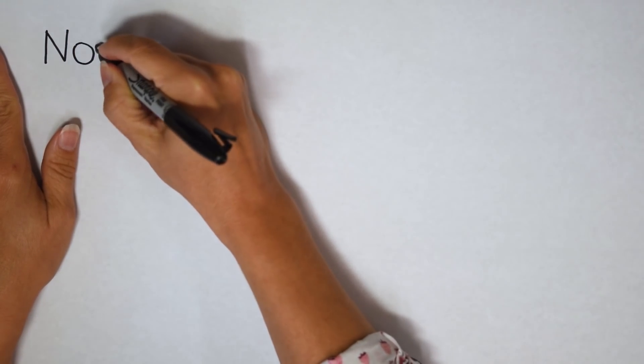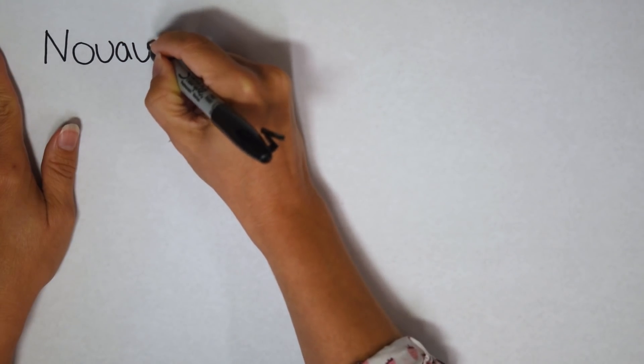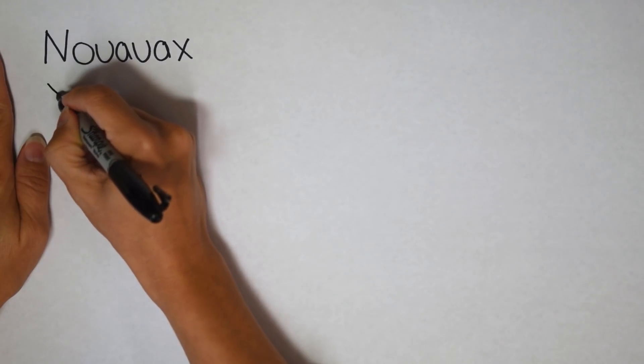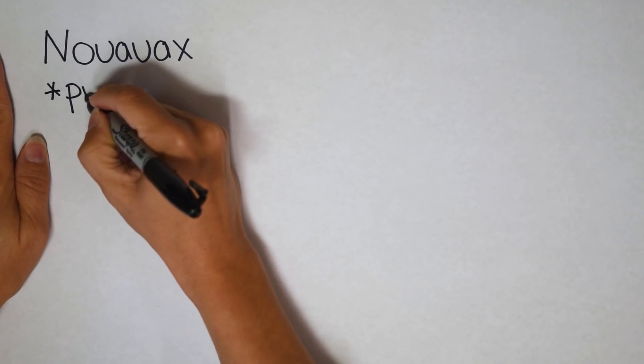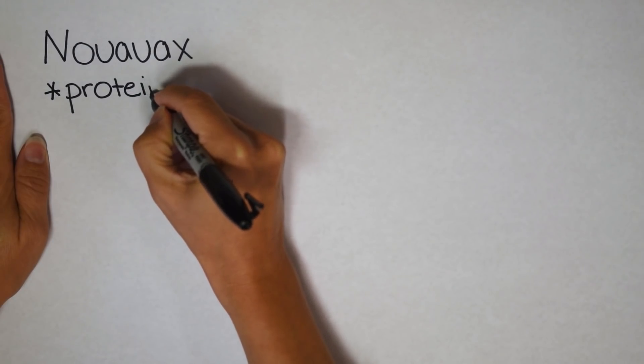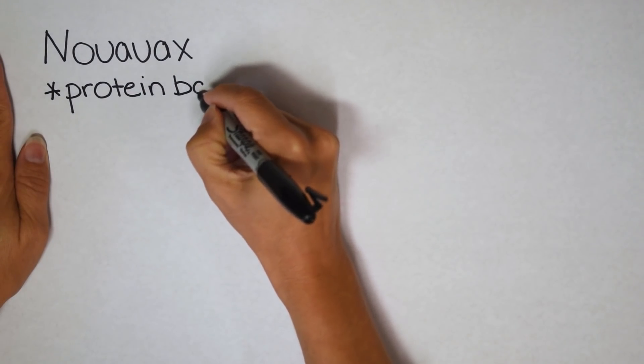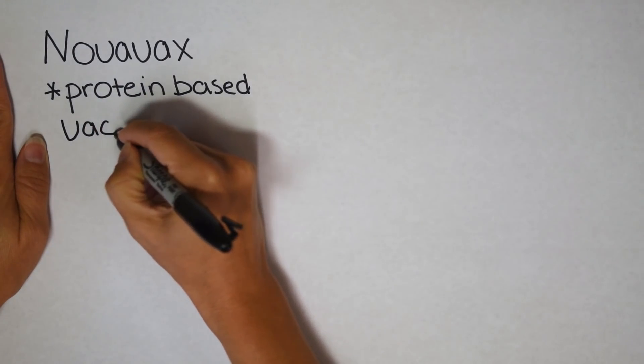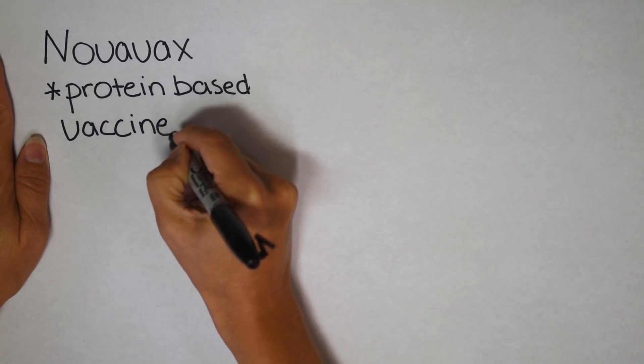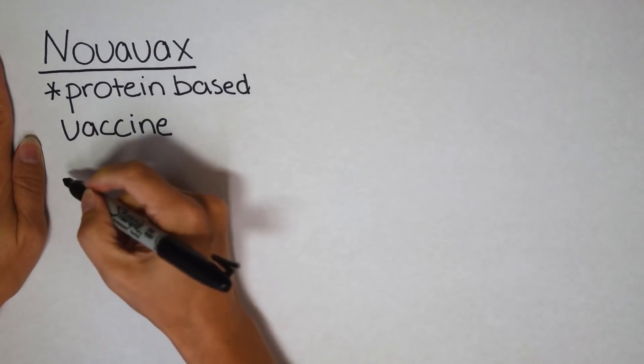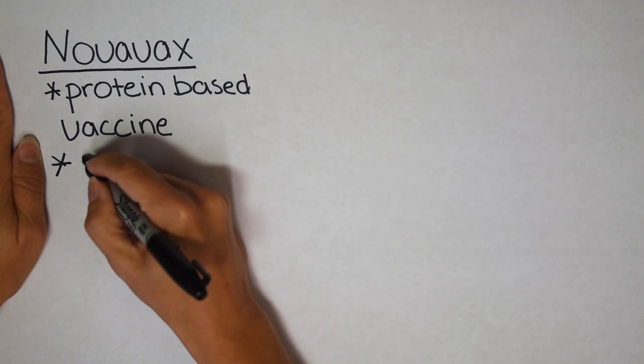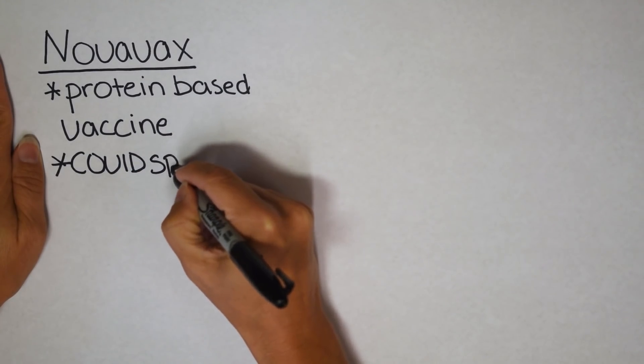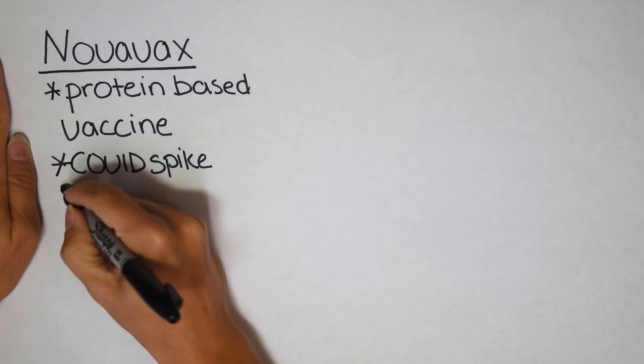Novavax is a company in the United States, and they are based out of Maryland. And they've primarily been working on vaccines. And they have come up with a new option for people in North America to try. This is a protein-based vaccine. And what I mean by that is it's only the COVID spike protein. So there's no mRNA, and there's no viral vectors. It's really just the COVID spike protein.